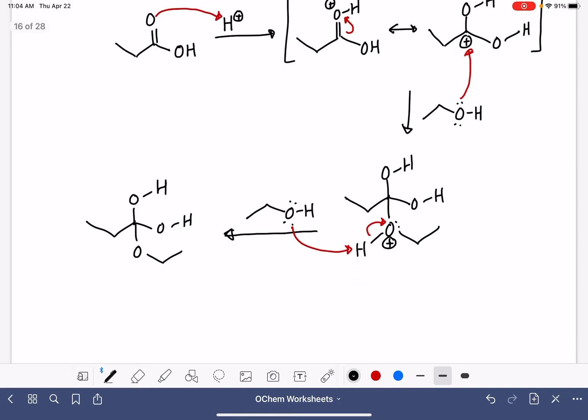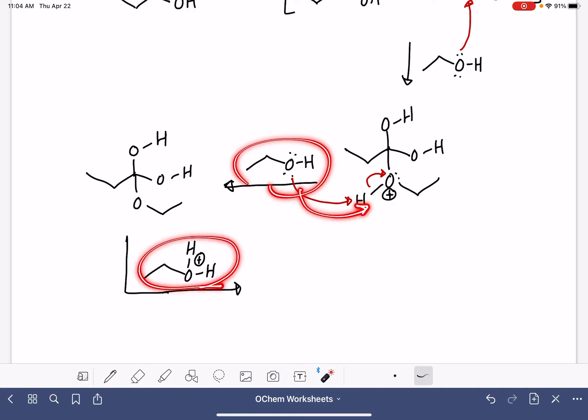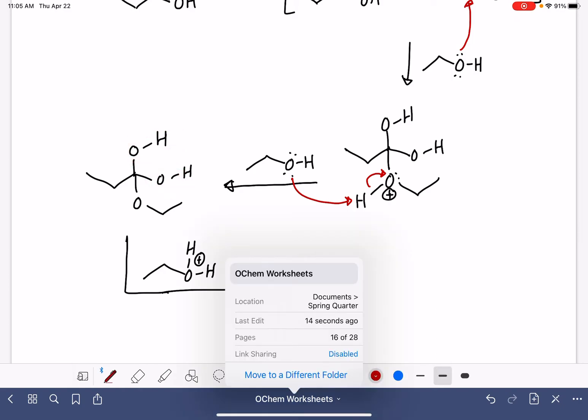Now, after doing that, we have created a protonated alcohol in this case because I chose to use alcohol to do the deprotonation. I have a protonated alcohol which is acidic, and this protonated alcohol is going to protonate one of the OH groups in this reaction. I'm just going to pick this one right here.